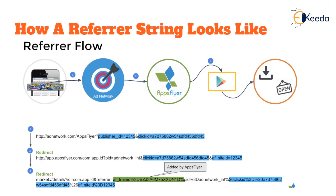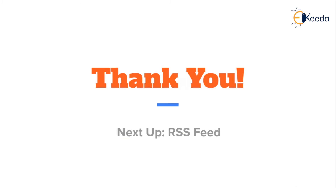From a digital marketing perspective, this is critical because it allows you to know which part of your campaign is working, which sources or platforms are actually driving traffic to you, and where you can invest further to bring more traffic to your application or website. So, this is about referrer string. In the next video, we'll be discussing the concept of RSS feed. Until then, thank you.